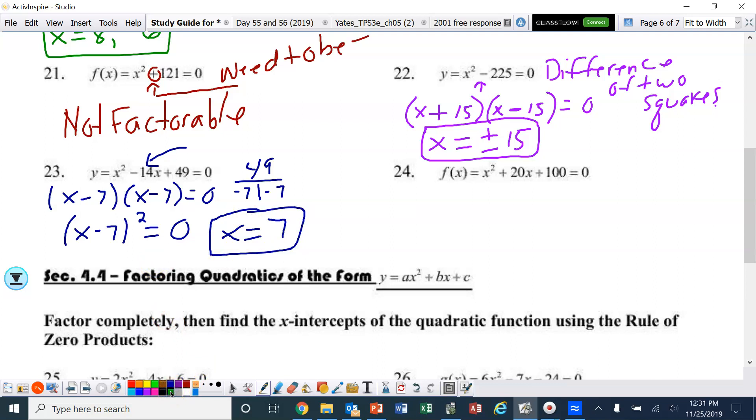Same thing with the next one. Factors of 100 that give us 20. Well, that would be 10 and 10. So, x plus 10 and x plus 10. Which, again, can be written as x plus 10 squared. So there's only one x-intercept on this one. And that would be negative 10.